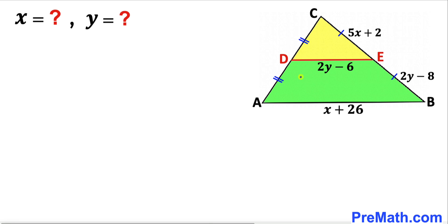Welcome to PreMath. In this video, we have triangle ABC where points D and E are the midpoints for side lengths AC and BC respectively.